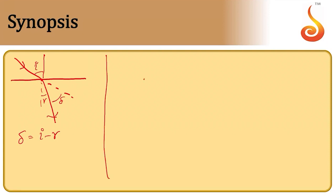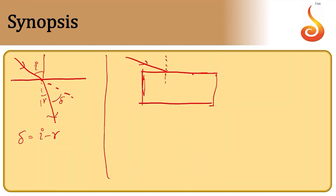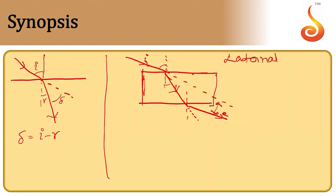If refraction takes place through a parallel-sided slab, the ray travels from rarer to denser medium moving towards the normal, and from denser to rarer moving away from the normal. The incident ray and emergent ray are parallel to each other, but there is a shift in position — this is called the lateral shift.